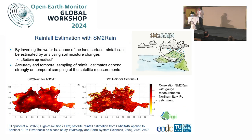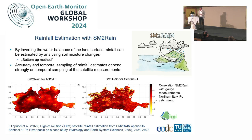Luca had a very successful idea: normally you estimate soil moisture from precipitation, but here we turn it around — we take a land surface model and make rainfall the derivative of soil moisture. If there is a positive soil moisture change, there was rainfall input. This is called the SM2Rain method. Applied successfully to ASCAT, SMAP, and SMOS data, and now for the first time applied to Sentinel-1, giving a rainfall estimate at one-kilometer scale. Currently it works at monthly timescales rather than daily due to temporal sampling limitations, but it shows the potential of high-resolution soil moisture data.